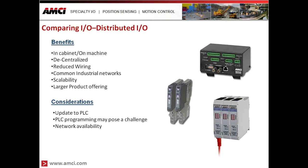When using distributed IO for your PLC system, some of the benefits are that you can mount it in the cabinet or directly on the machine — even in hazardous environments. It decentralizes the system, allowing you to locate IO closer to where the sensor is mounted, which reduces wiring. Distributed IO is available with many common industrial networks, and in some cases it's much more scalable since you're not limited to a rack construction. You also get a much larger product offering beyond what a single PLC supplier offers.